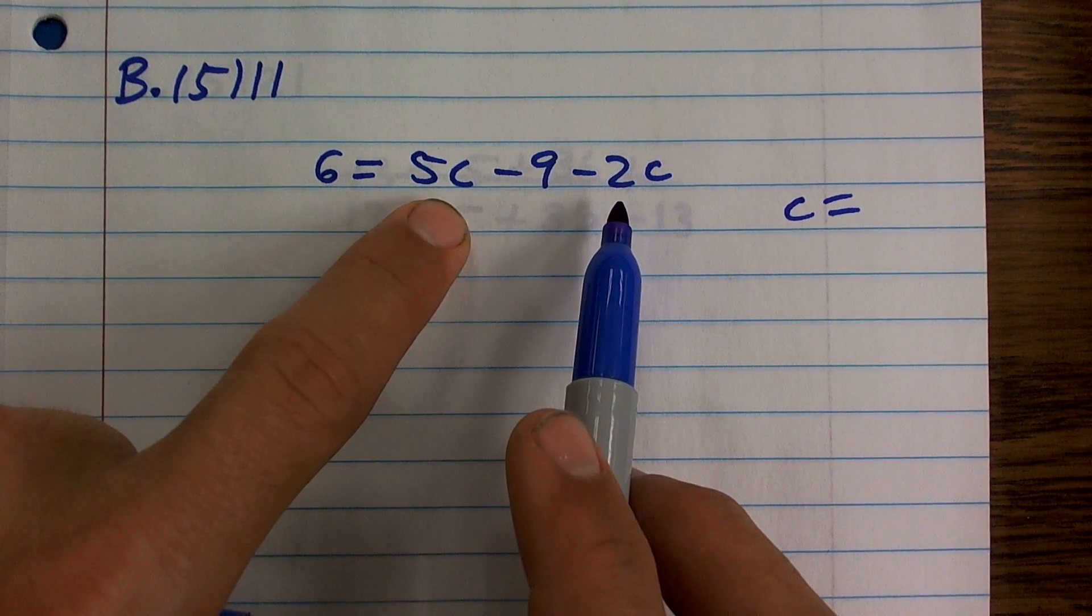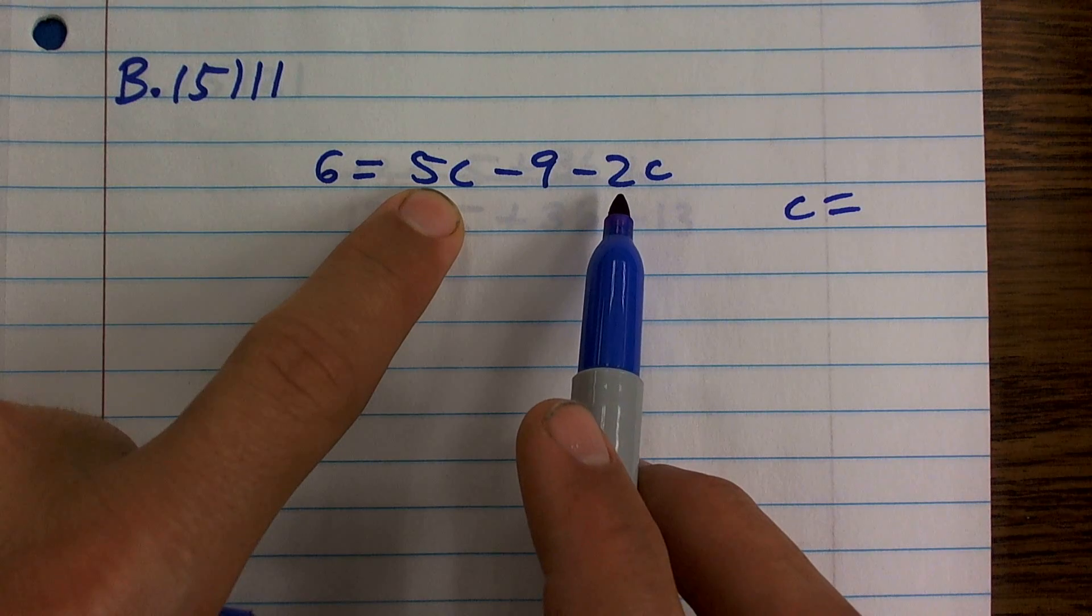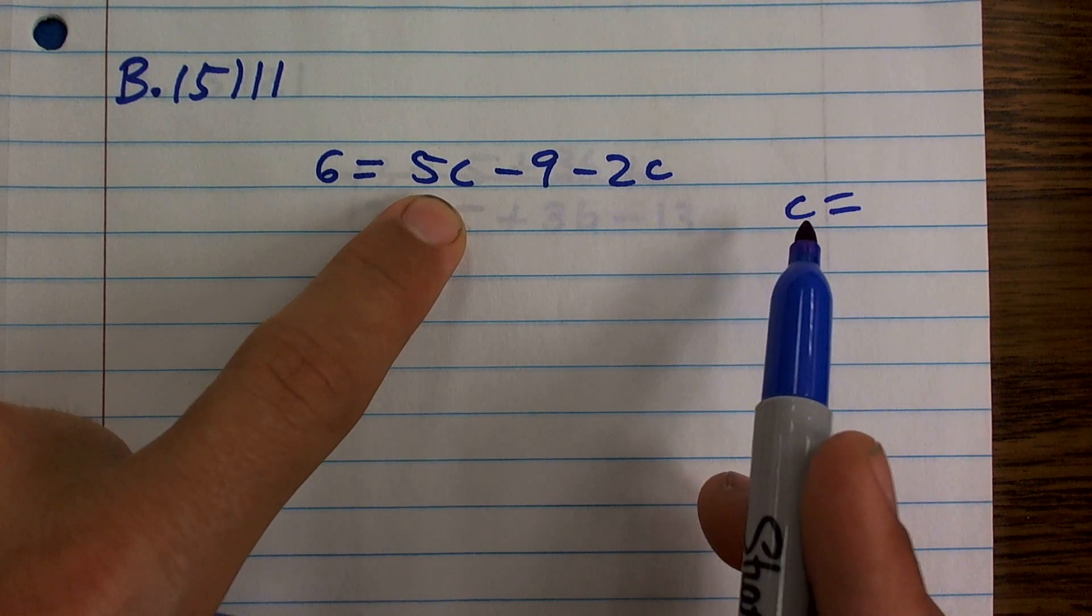Right now I see I have two variables here. Well, this ain't going to work like this. I can't have two variables. I can only have one here.